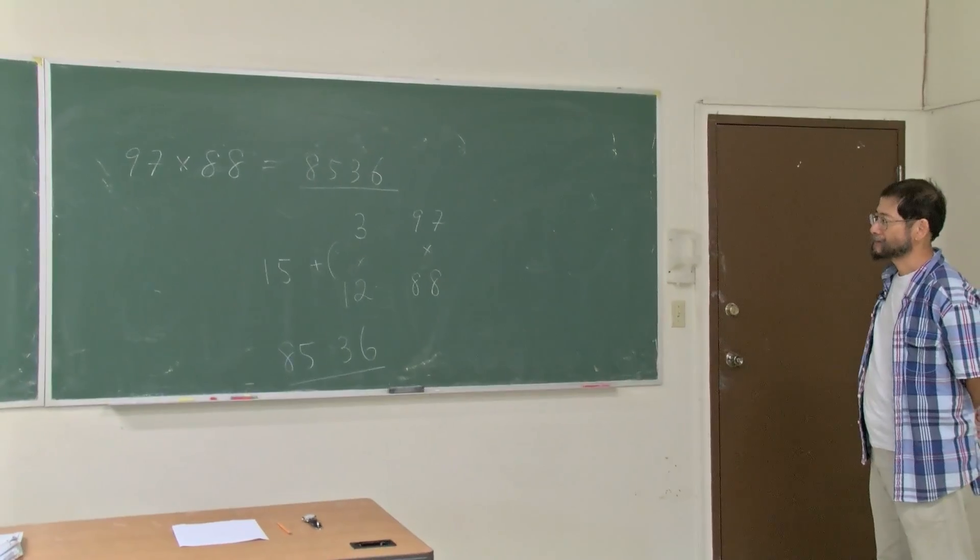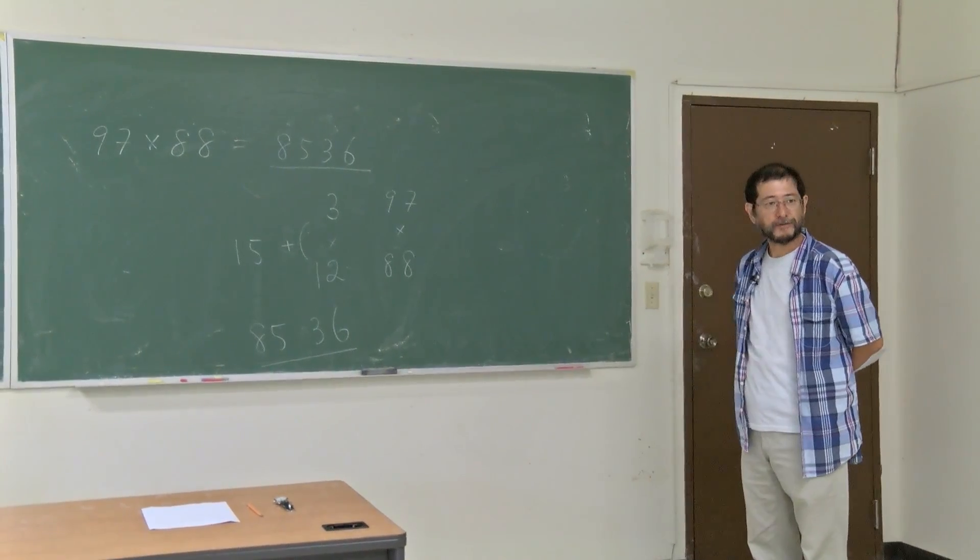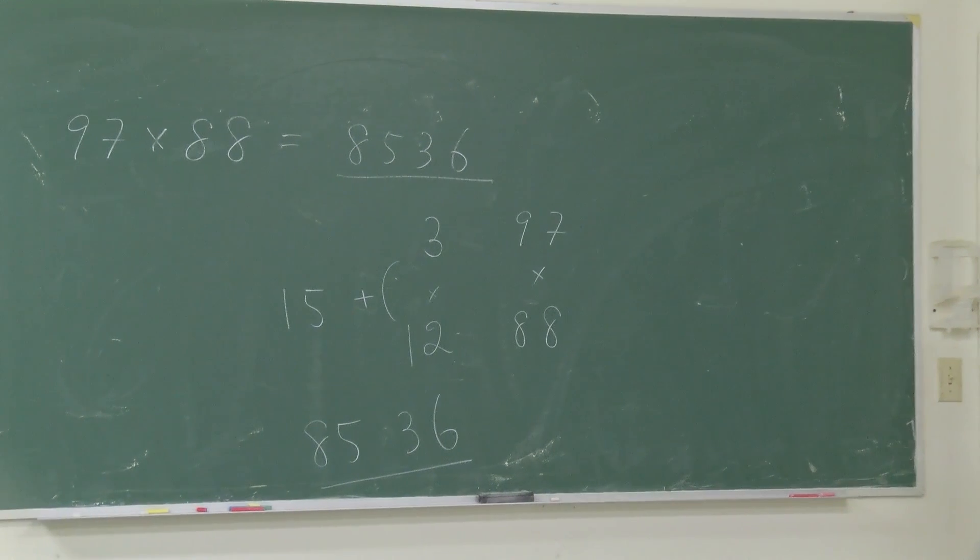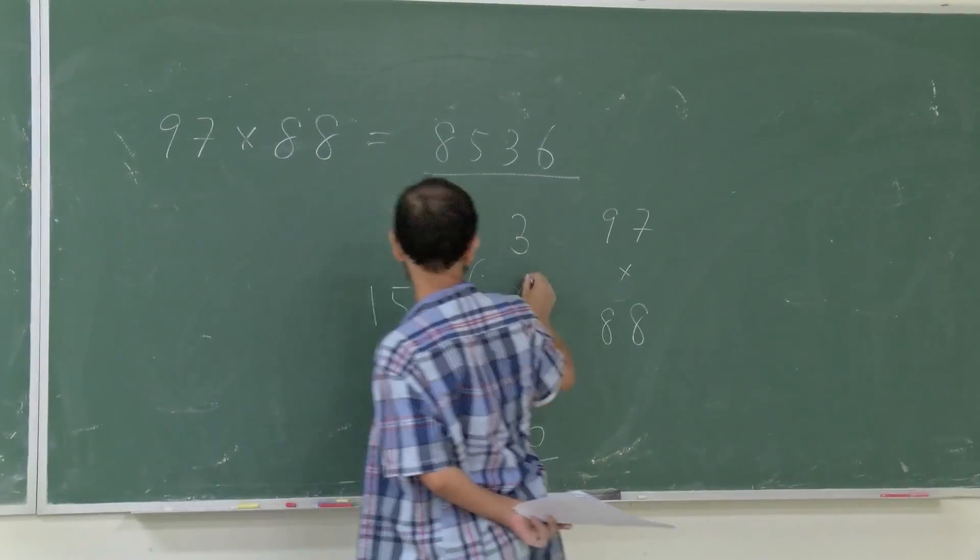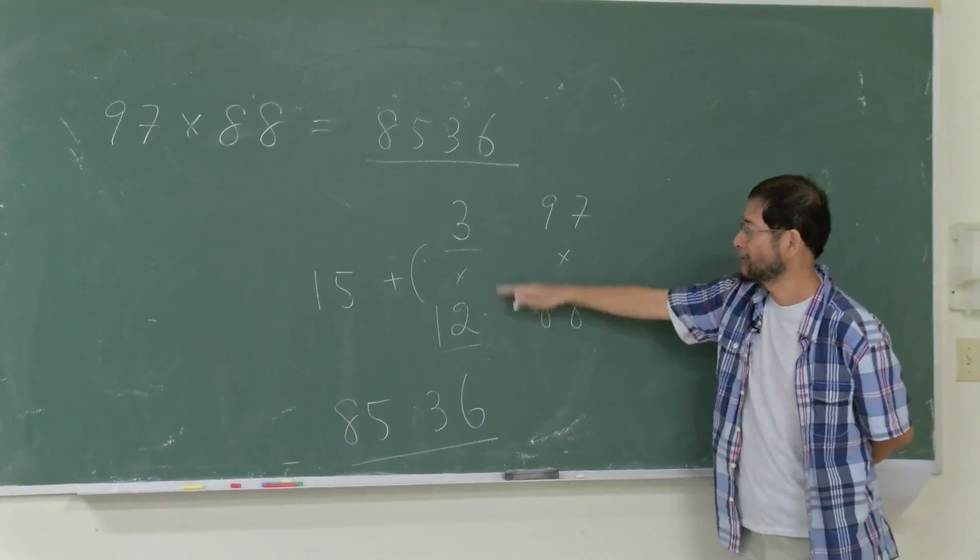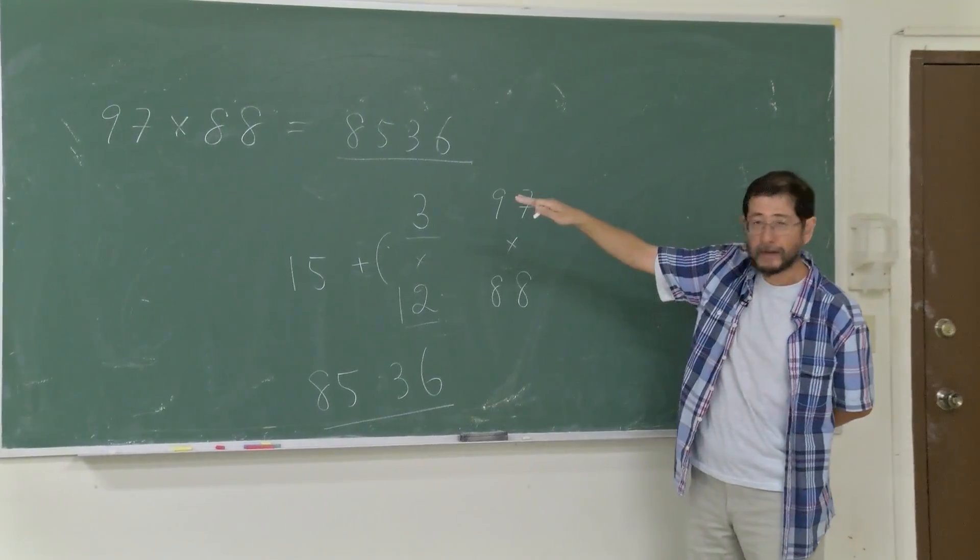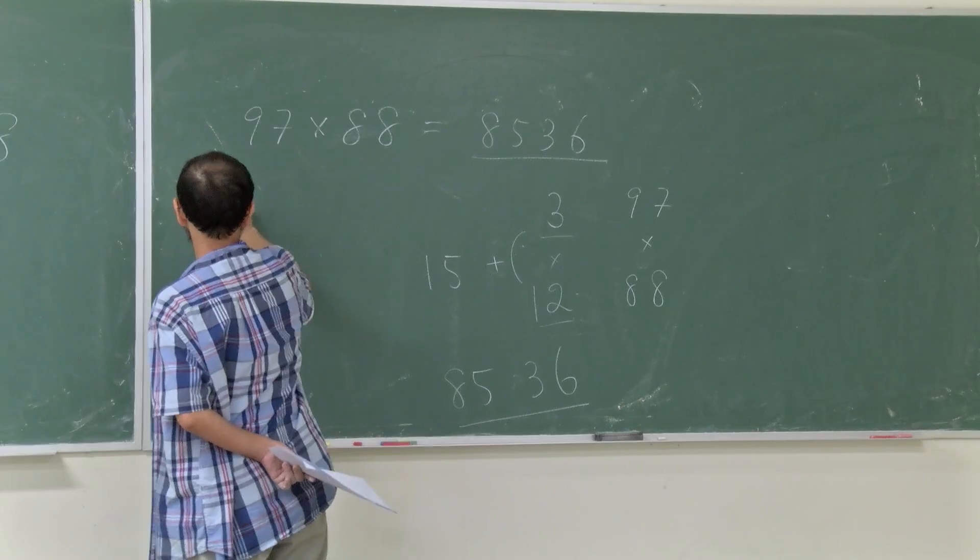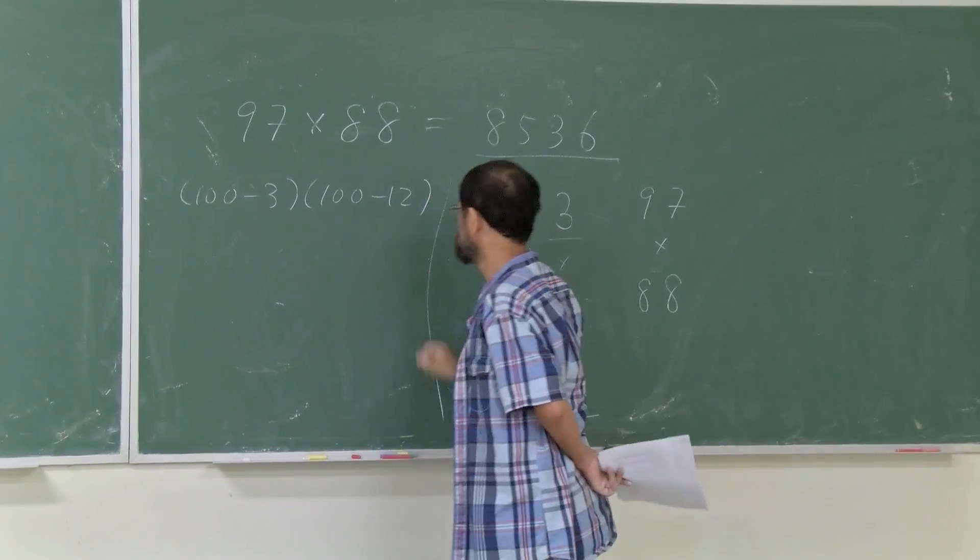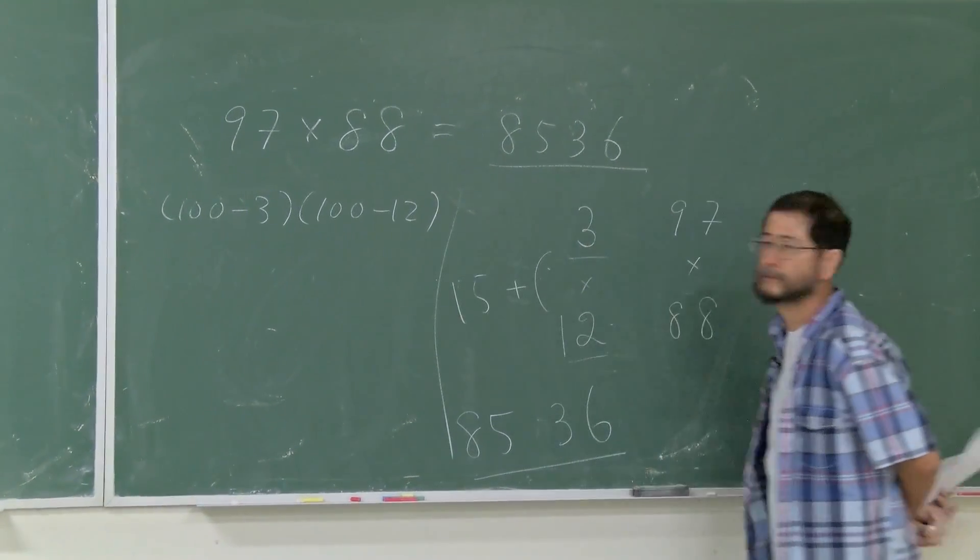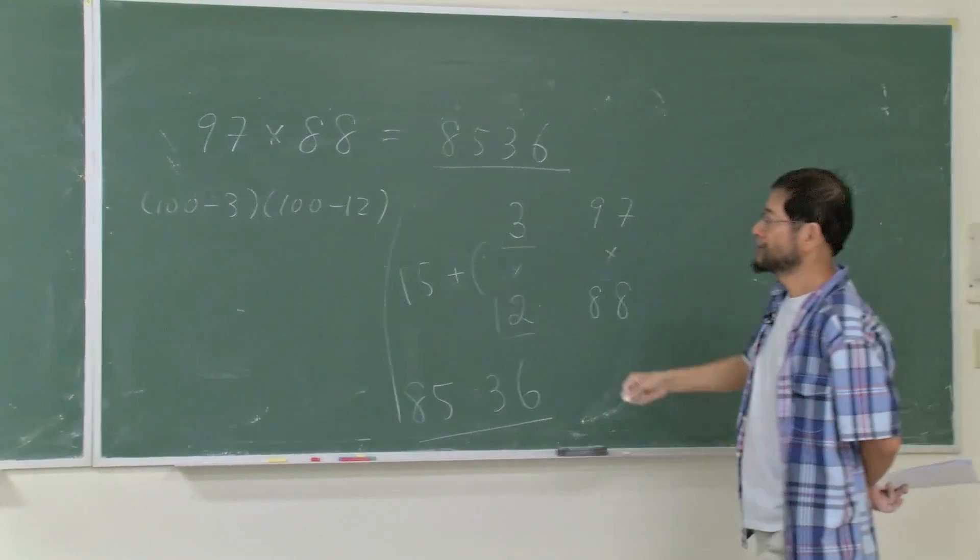Again, why does this new method work? There's something common between these two. The key is the FOIL, which we studied previously. Let's see how FOIL is related to this. What I did here is I computed 100 minus 97, 100 minus 88. So I can rewrite these two to be 100 minus 3 times 100 minus 12.